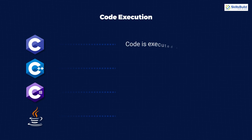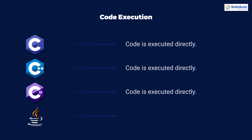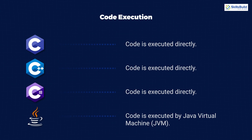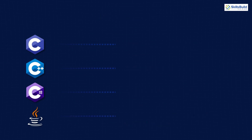In terms of code execution: C code gets executed directly, and the same goes for C++. C# code also gets executed directly. Java, on the other hand, has its code executed by the JVM — the Java Virtual Machine — so Java uses a virtual machine to execute its code.